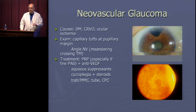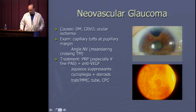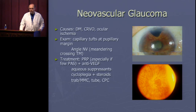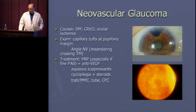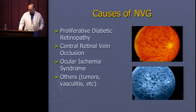If caught too late, you have to treat with aqueous suppressants, steroids, cycloplegia, and sometimes surgical intervention like trabeculectomy, tube shunts, or ciliary destructive procedures to control intraocular pressure.